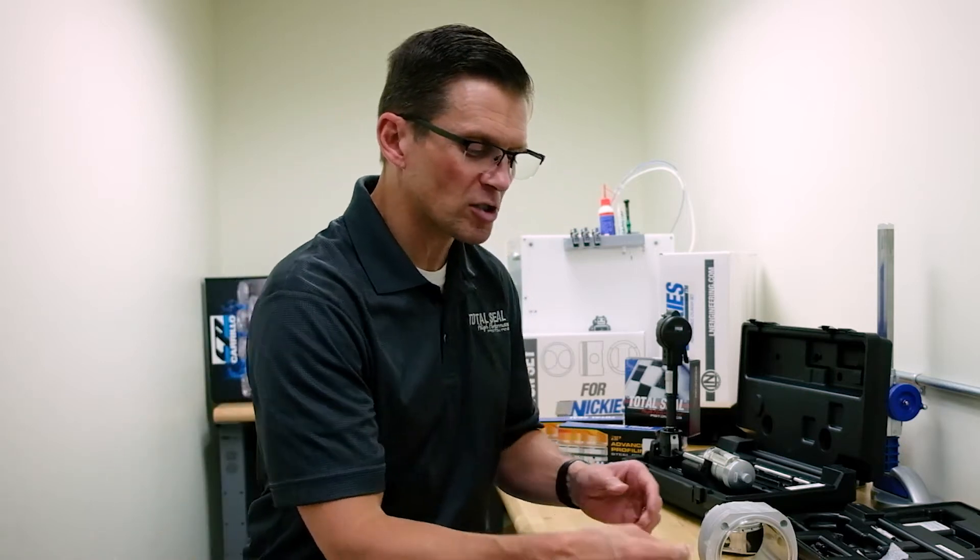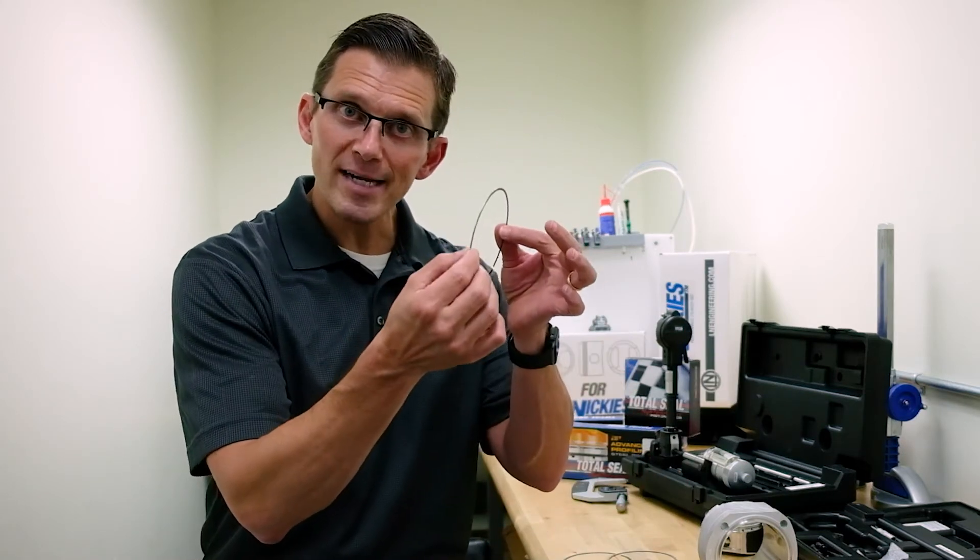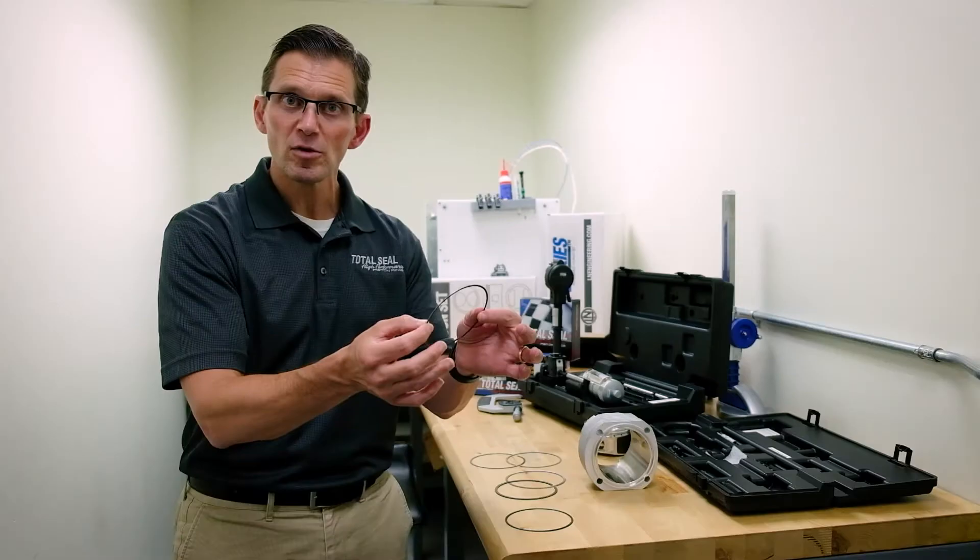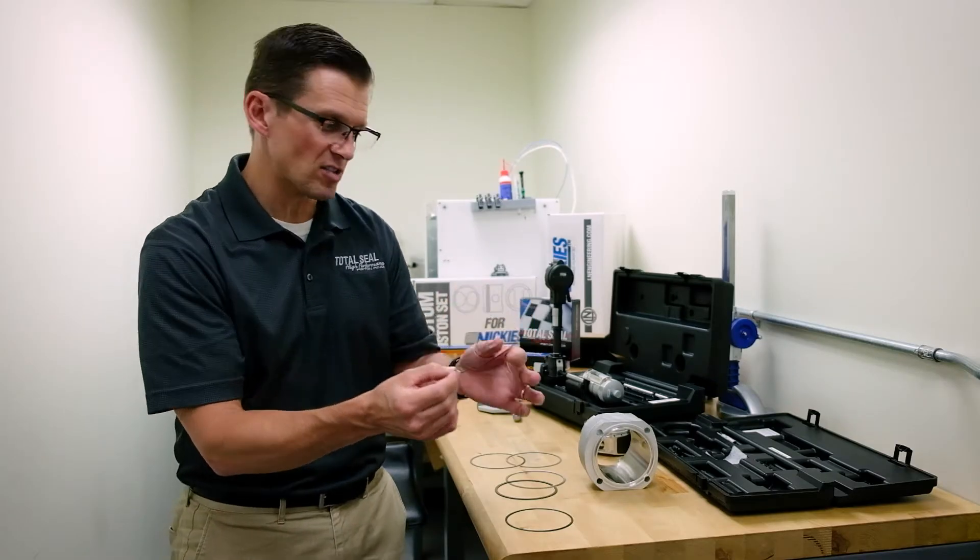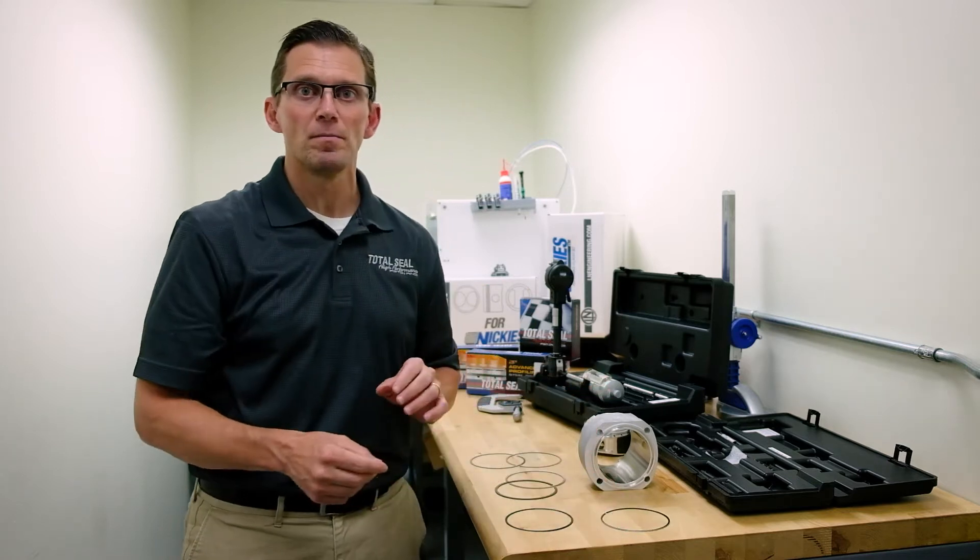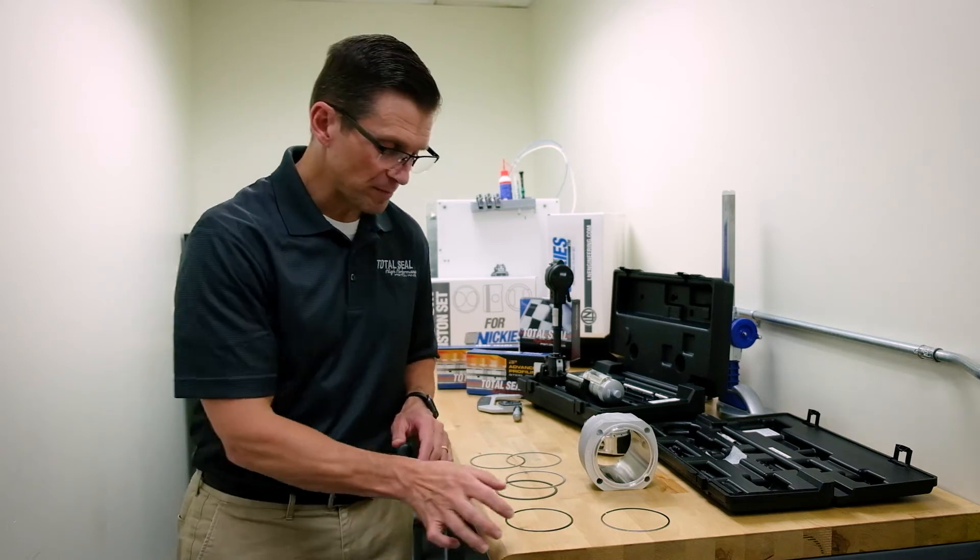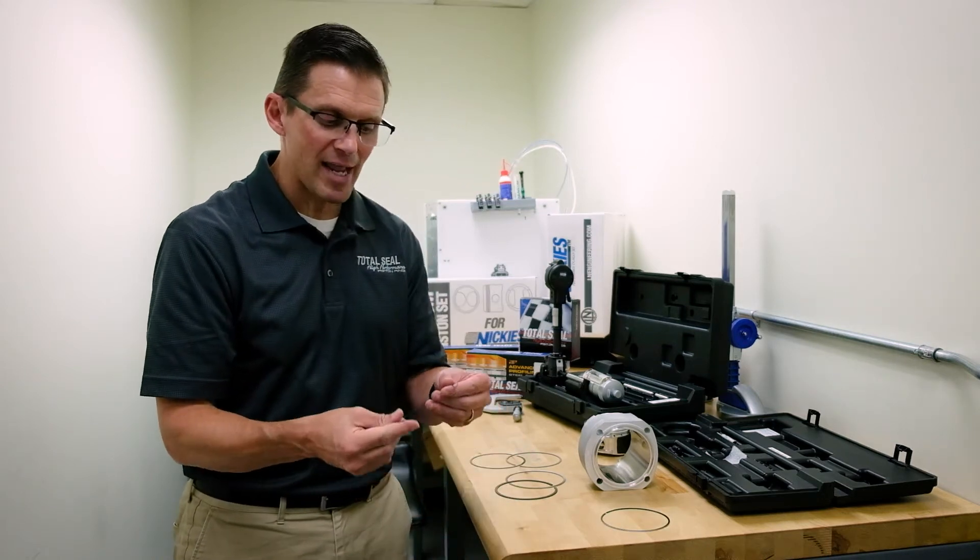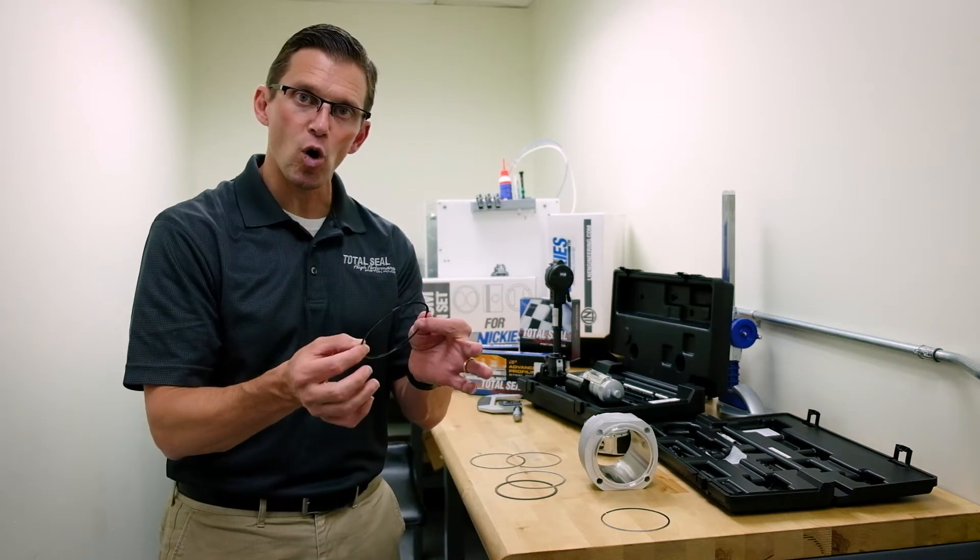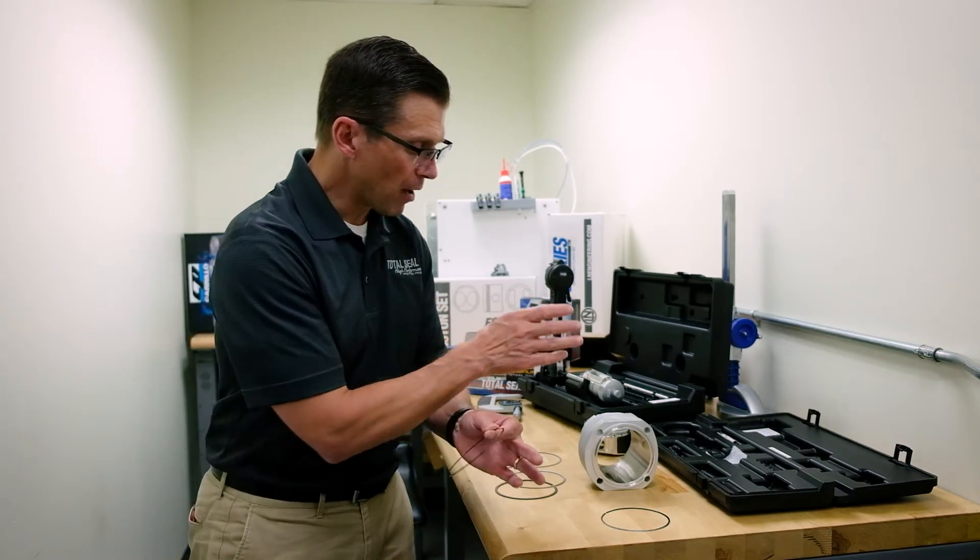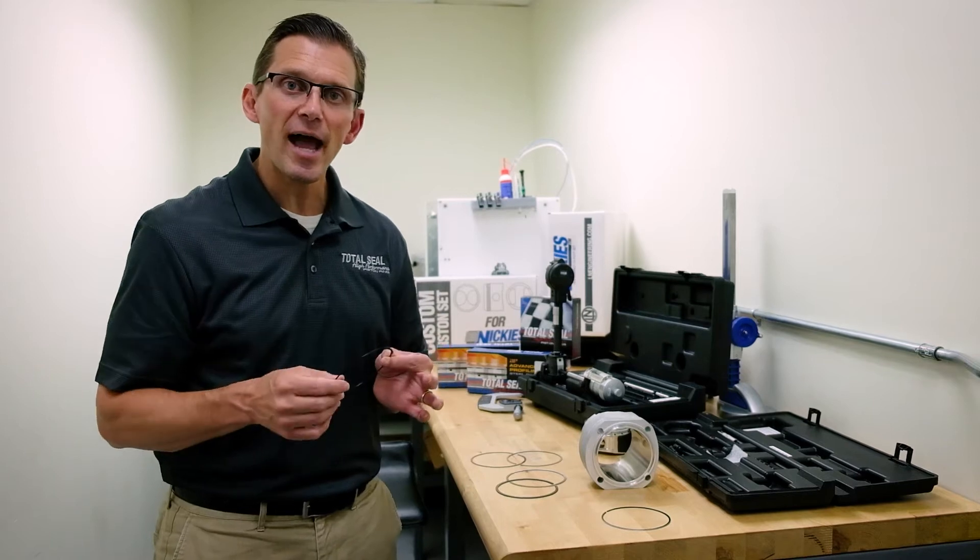As such, the number one problem you can run into is oil rings like this that are hard chromed through an electric plating process are incompatible with nicosil and alucil bores. Instead, you want to run a non-chromed oil ring, which is compatible with both nicosil and alucil.